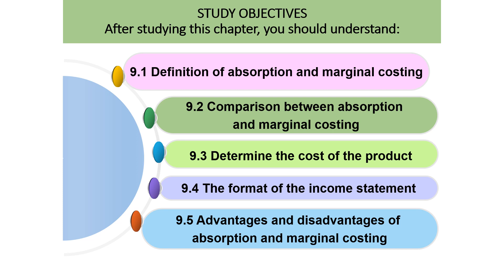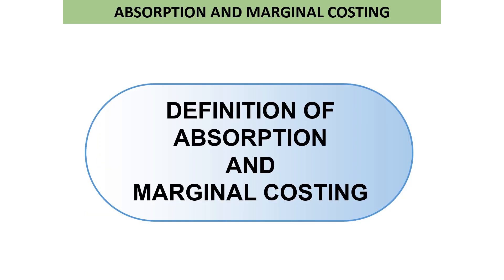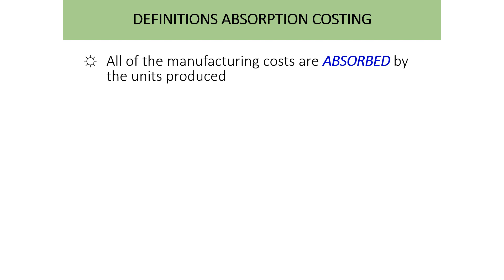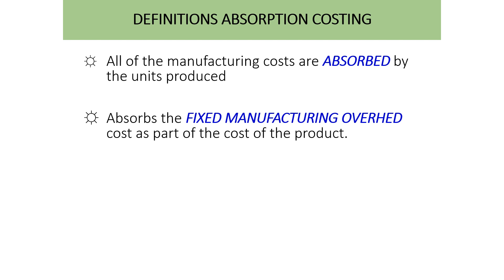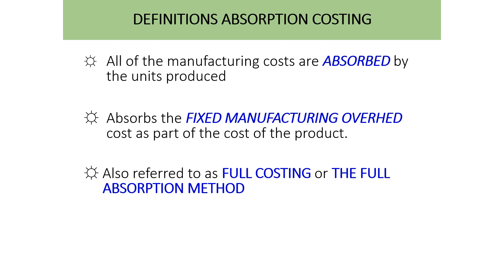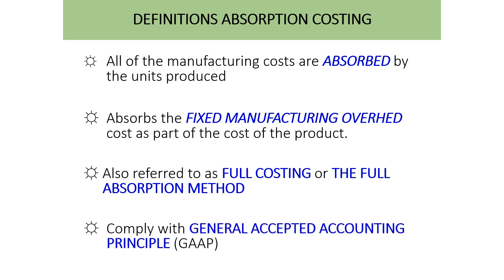For this part, we only cover the theory section. Looking at the definition of Absorption and Marginal Costing: Absorption Costing is where all manufacturing costs are absorbed by the units produced. It absorbs fixed manufacturing overhead cost as part of the cost of the product, also referred to as full costing or the full absorption method, and it complies with Generally Accepted Accounting Principles, or GAAP.